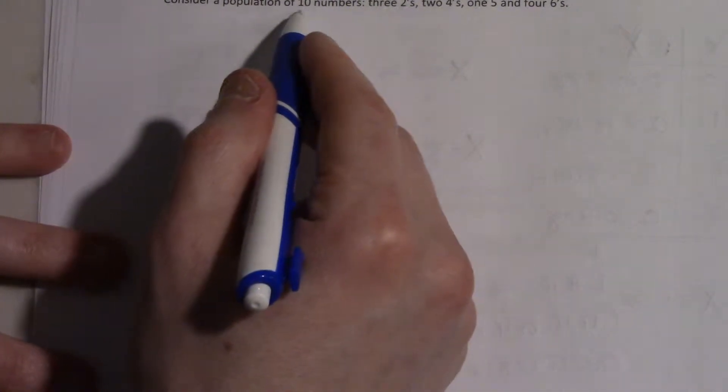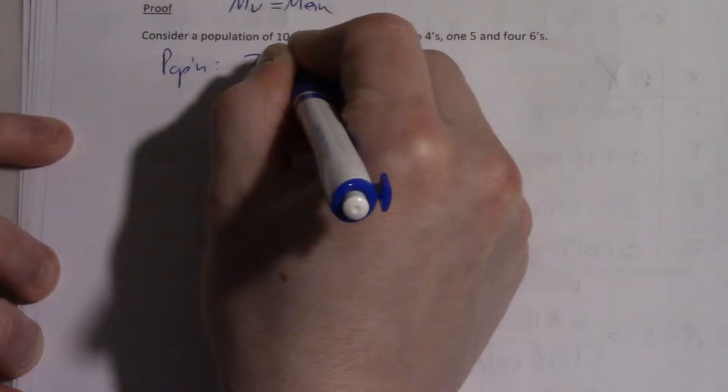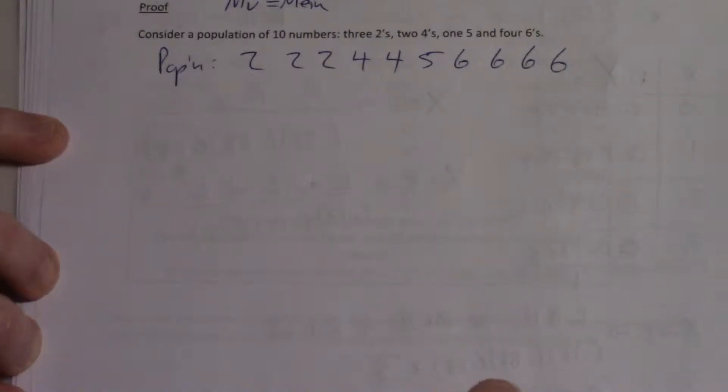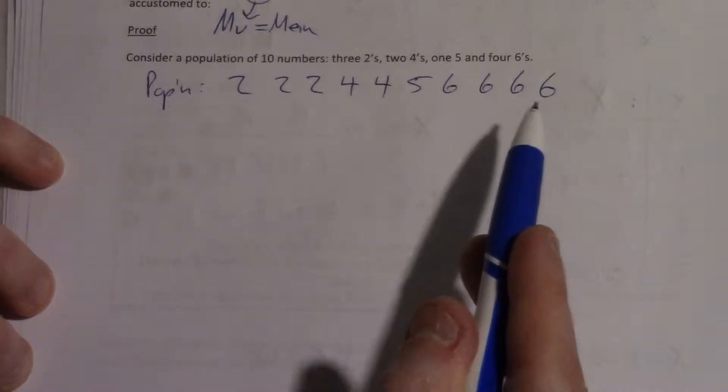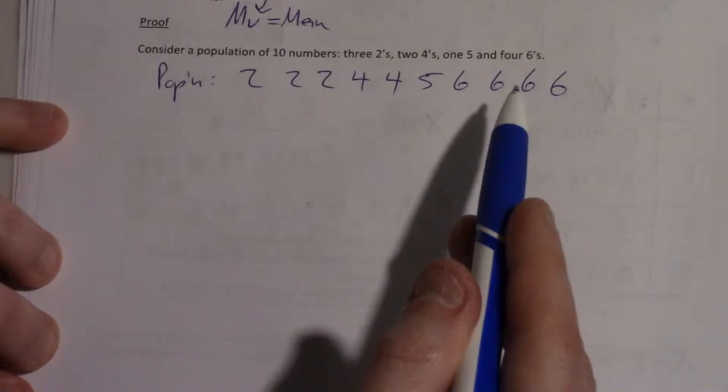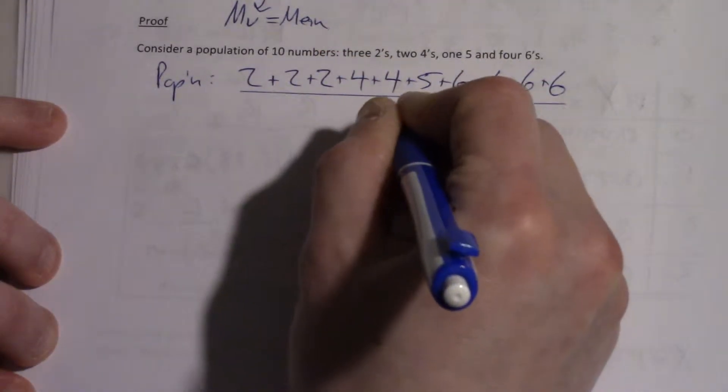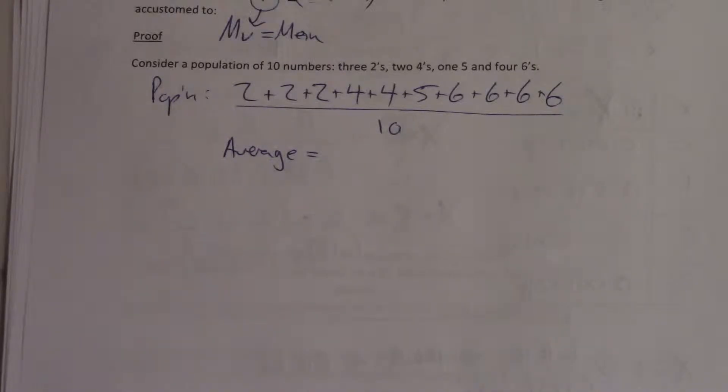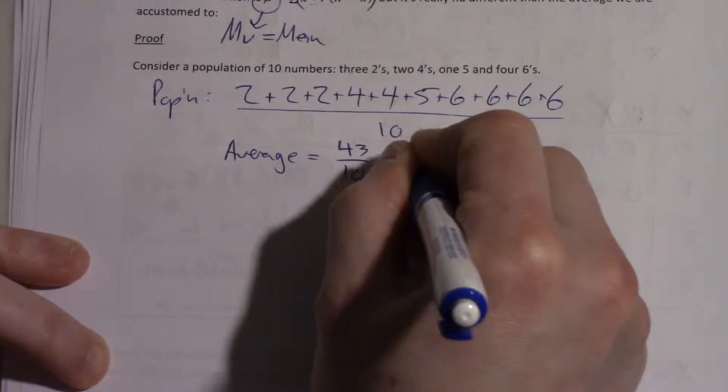So let's do an example of this. So here's our population. We'll keep it simple. It's just 10 numbers. So the population is 3 2's, 2 4's, 1 5, and 4 6's. So we're measuring something. These are all of the measurements we care about. And what we're interested in is, what's the average value we would see from the population. So the old way of finding the average would be, let's add all these up and divide by 10. So if you do that, what you end up with is 43 divided by 10, or 4.3.